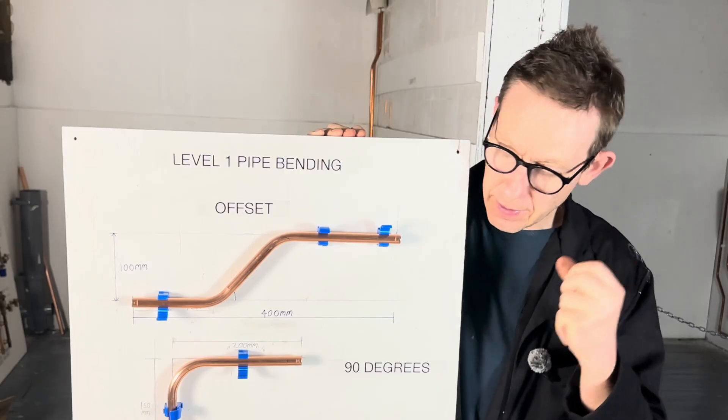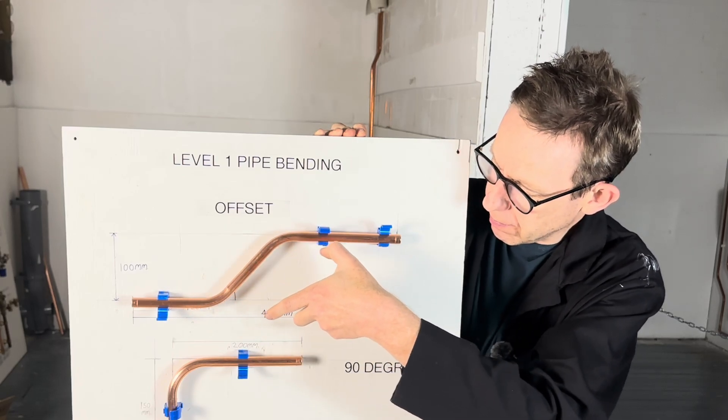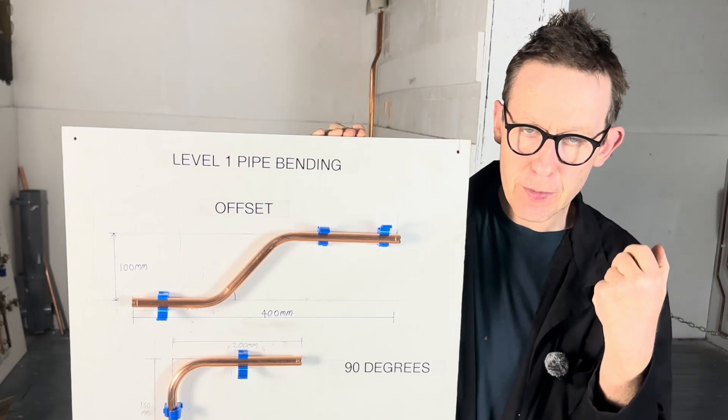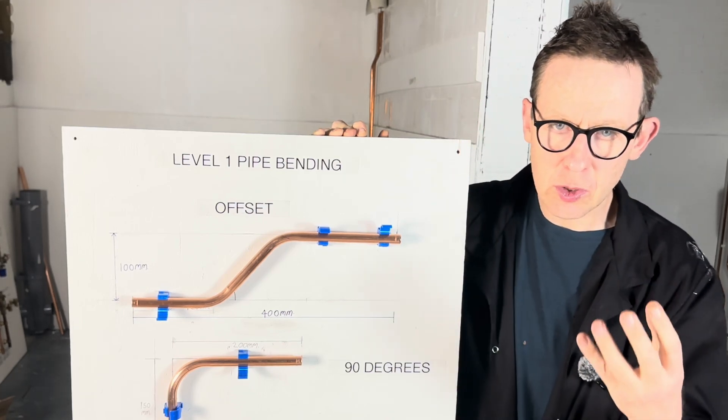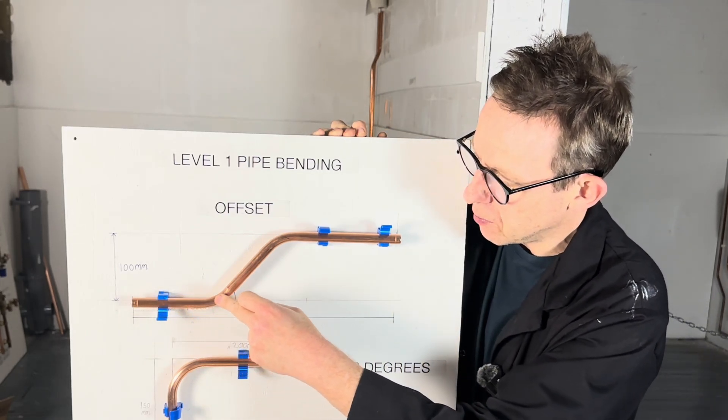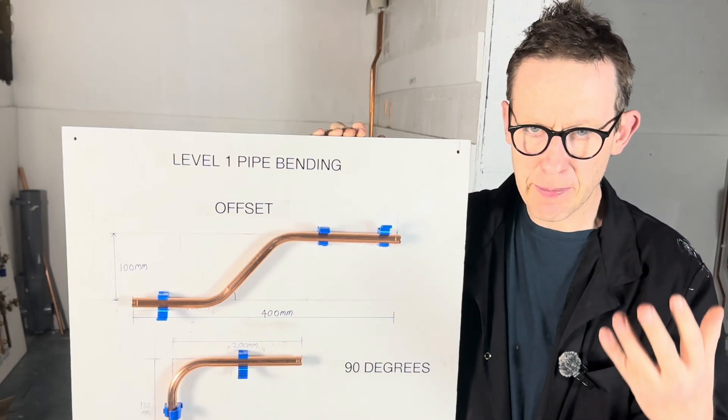An offset is bending a pipe to achieve your desired height and to do this you would need to bend the pipe twice and the angle is always the same angle. So for example, this pipe here is 45 degrees as we've bent it back 45 degrees. That's the basics.